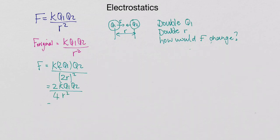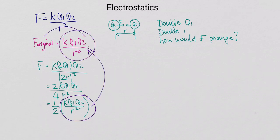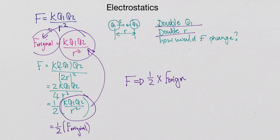And now you'll see that 2 and that 4 will cancel, and it will leave you with 1 over 2, big bracket k Q1 Q2 over r squared. And now hang on a second, you'll see that this is the same as the thing we actually started with, and that is F original. So in other words, this is equal to a half multiplied by F original. So we can say if we had to double Q1 and double the distance, the force would basically become a half of the original force.